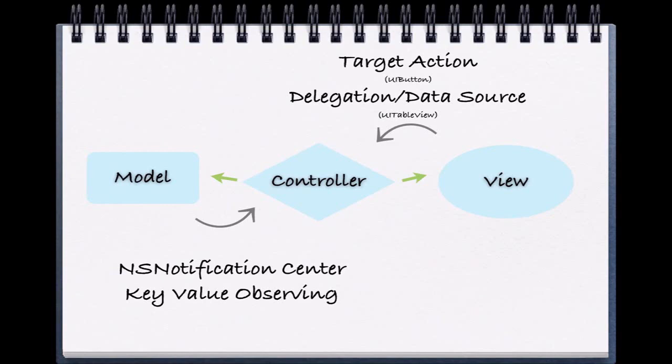The controller is the middleman of this communication and it has free range to talk to both camps. For example, when we press a button we would never immediately tie that to making a change to our model. If a change needed to be made, our UIButton would alert the view controller that it had been pressed through target-action, and then the view controller would adjust the model.